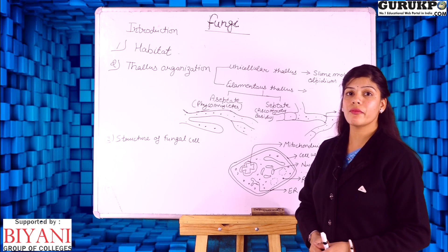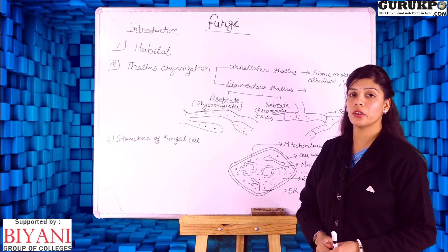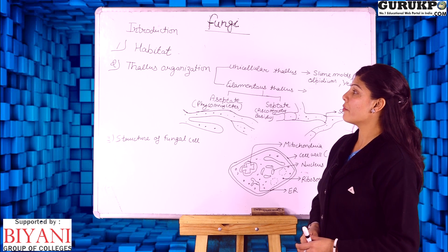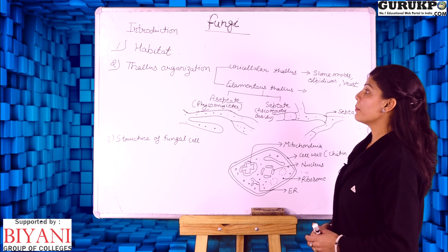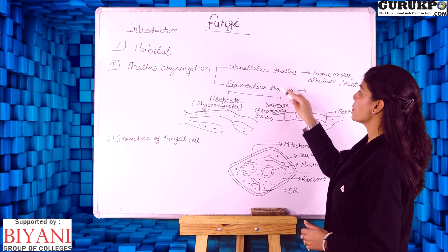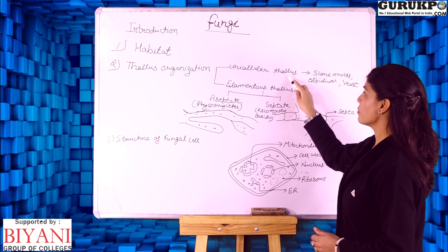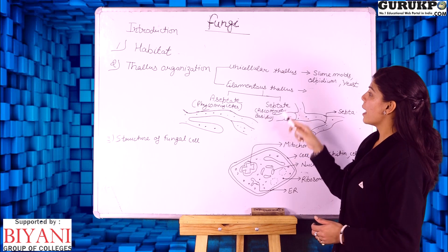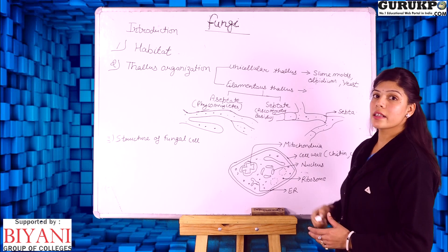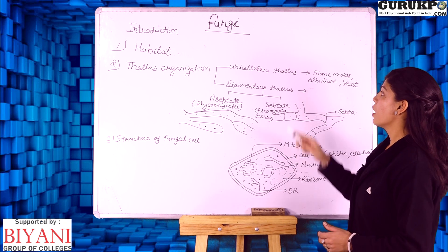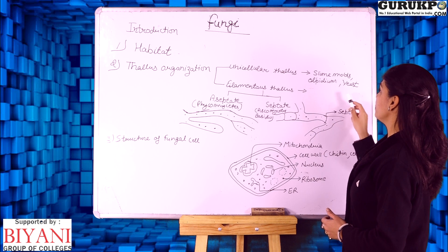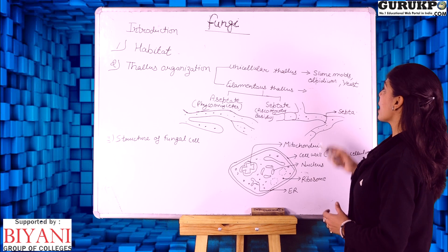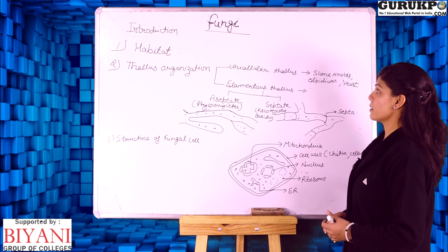The plant body of fungi is not differentiated into root, stem, and leaves, so the plant body of fungi is called a thallus. All members of fungi have two types of thallus. The first is unicellular thallus and the second is filamentous thallus. Examples of unicellular thallus are slime molds, Olpidium, and yeast.